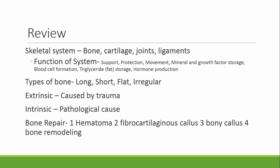Now for a review. The skeletal system is composed of bone, cartilage, joints, and ligaments. Its functions include support, protection, movement, mineral and growth factor storage, blood cell formation, fat storage, and hormone production. There were four types of bone mentioned: long, short, flat, and irregular. Extrinsic fractures are caused by trauma; intrinsic fractures are a result of a pathological cause. Bone repair happens in four steps: the formation of the hematoma, the formation of the fibrocartilaginous callus, the formation of the bony callus, and bone remodeling.